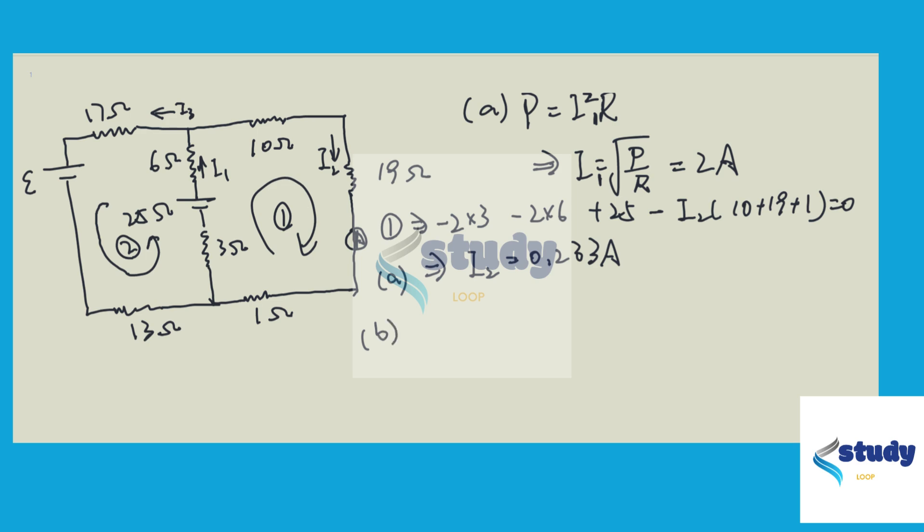So for part B, we know I1, we know I2, so I3 equals I1 minus I2, equal to 1.77 amperes.